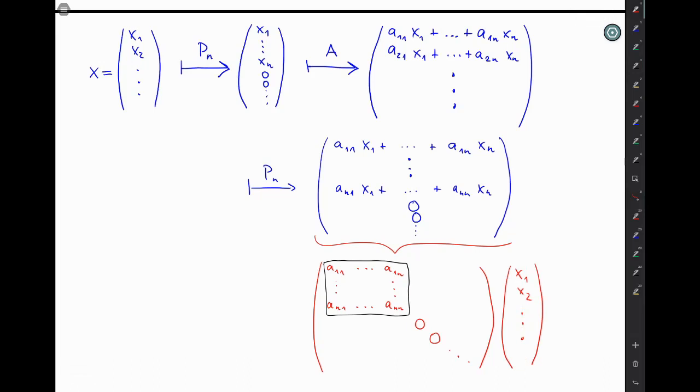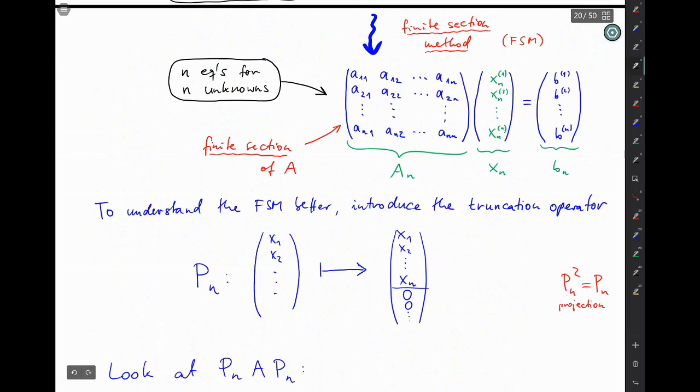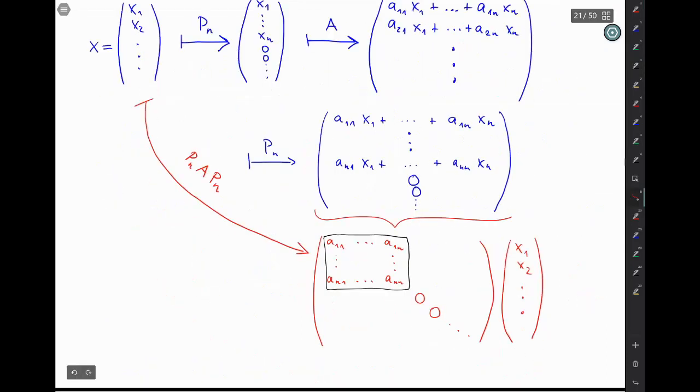So the composition Pn A Pn brings us directly from this input vector to this result over here. And the matrix that we called An before, just this one, is still visible in this computation and in this expression Pn A Pn. Well, you can see it here, right?